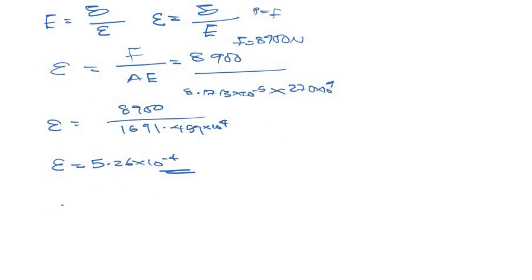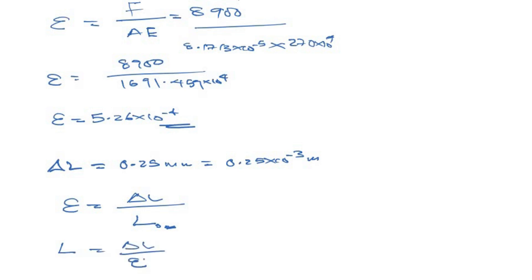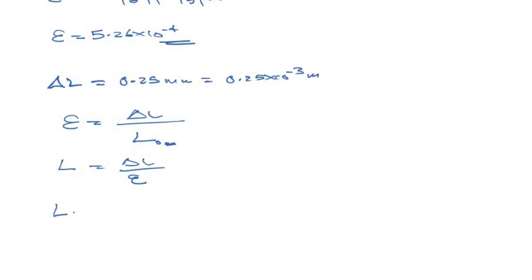Now to get the final length, we are told from the question that the elongation ΔL is 0.25 millimeters, which equals 0.25 times 10 to the power of minus 3 meters. Since strain equals elongation divided by length, we rearrange to get the maximum length L equals elongation over strain.